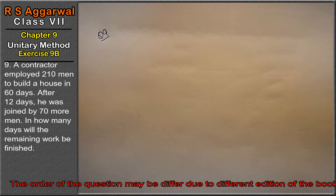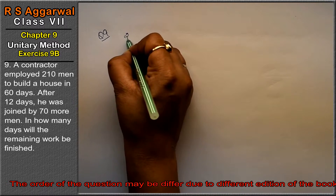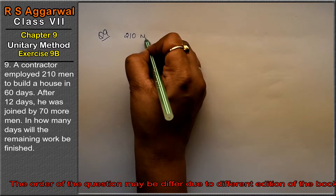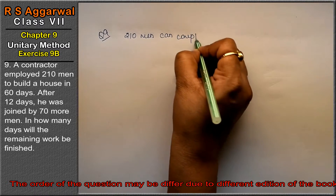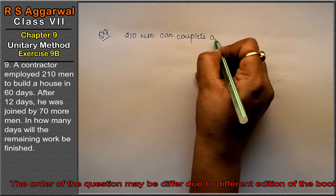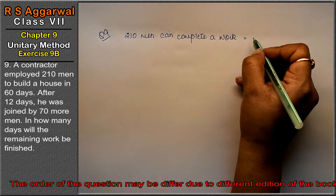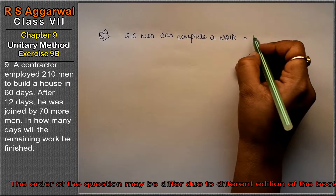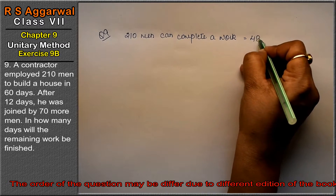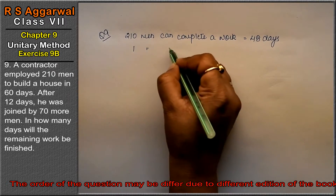So 210 men can complete the work in 60 days. Work was done for 12 days, so the remaining work needs to be done in 60 minus 12 days, that means 48 days remaining.